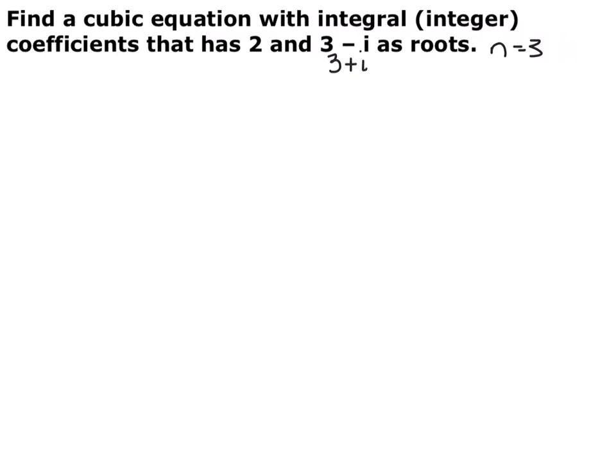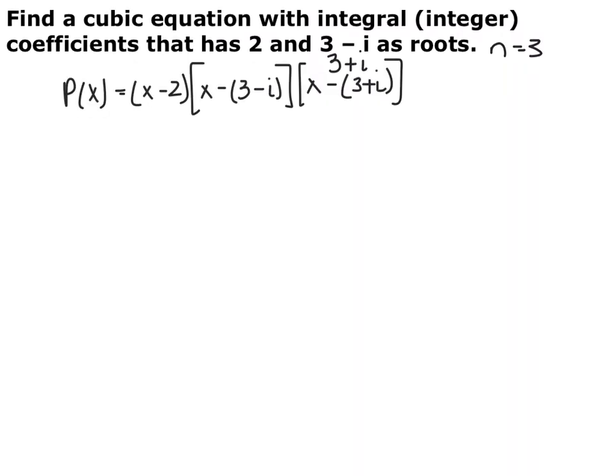They are actually giving us all three zeros. If you remember from section 4.2, if something is a zero, then x minus that number is also a factor. So you can write this in factored form: the zero 2 becomes x minus 2, the zero 3 minus i becomes x minus the quantity (3 minus i), and 3 plus i becomes x minus the quantity (3 plus i). Now we're going to multiply and foil all this out to get the integer standard form coefficients.